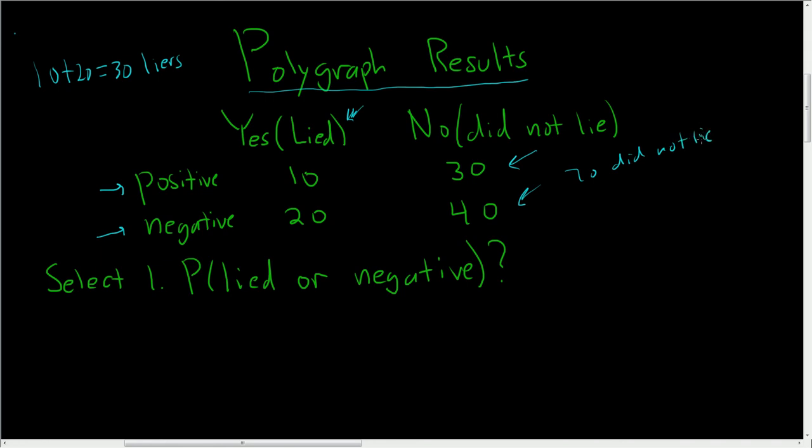All right, so this question, we have to find the probability that if we select one person or one result at random, what is the probability of selecting a liar or a negative? So the key word is or. So whenever you have a table and you have an or, there's a trick.